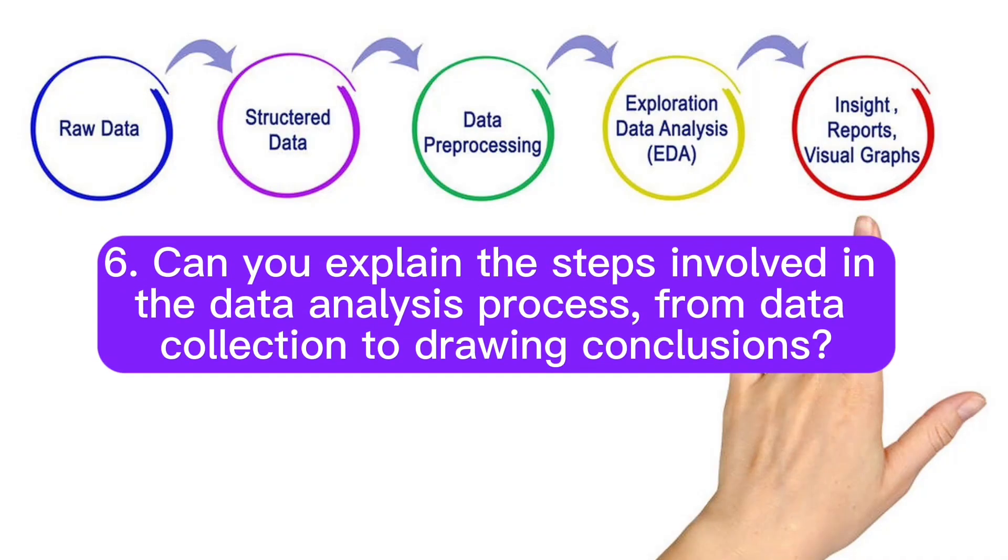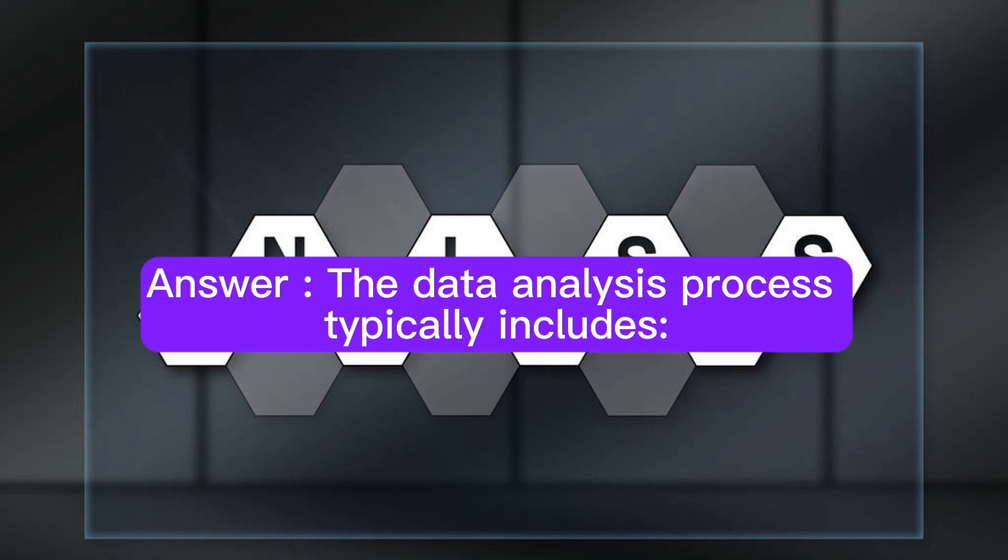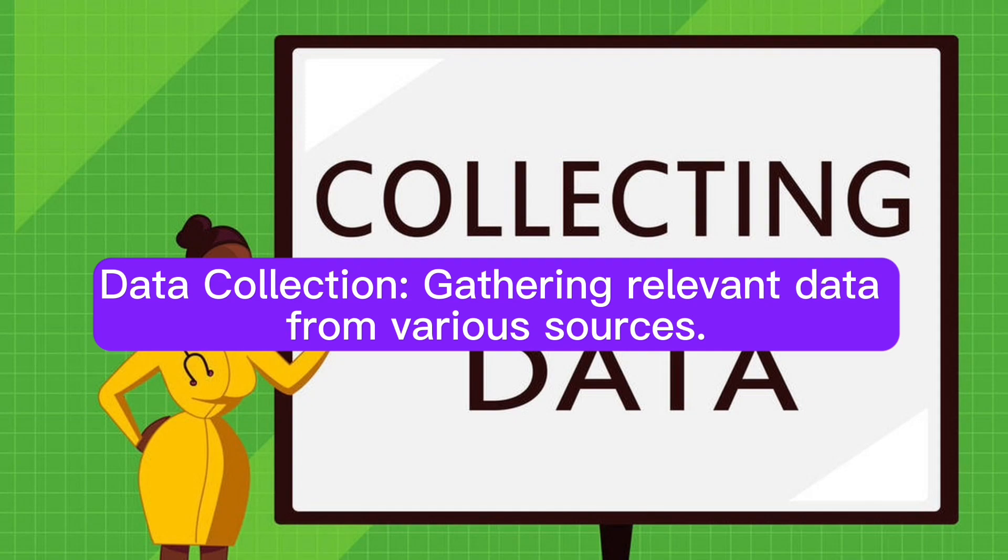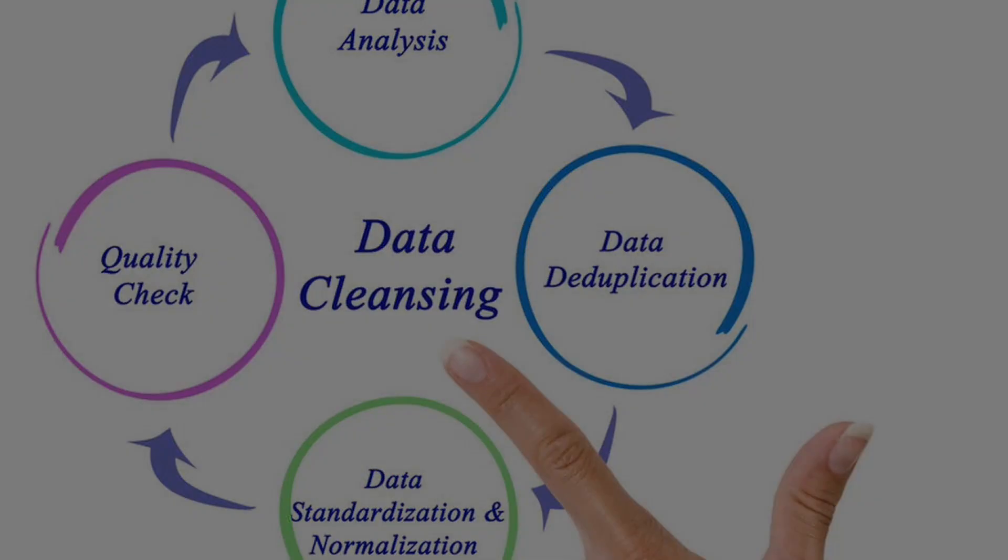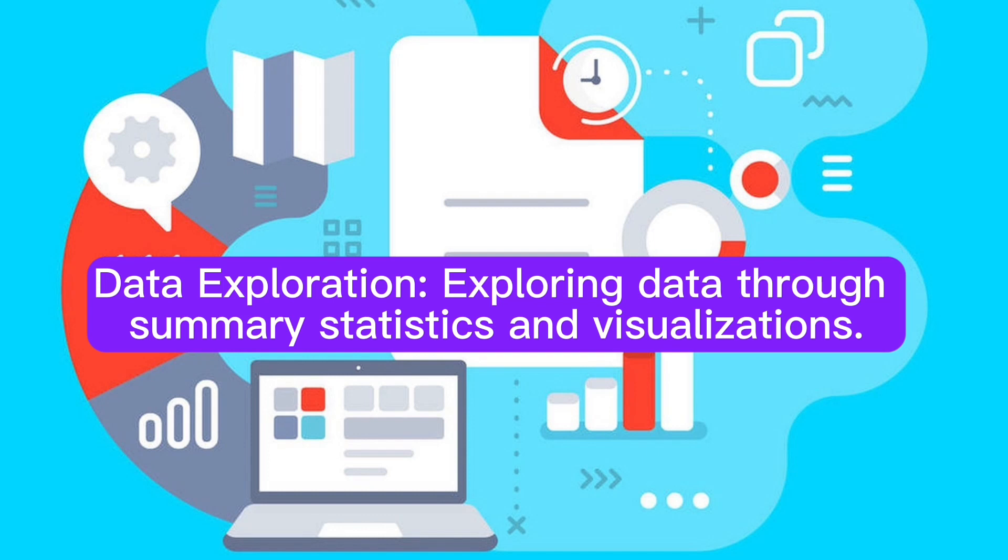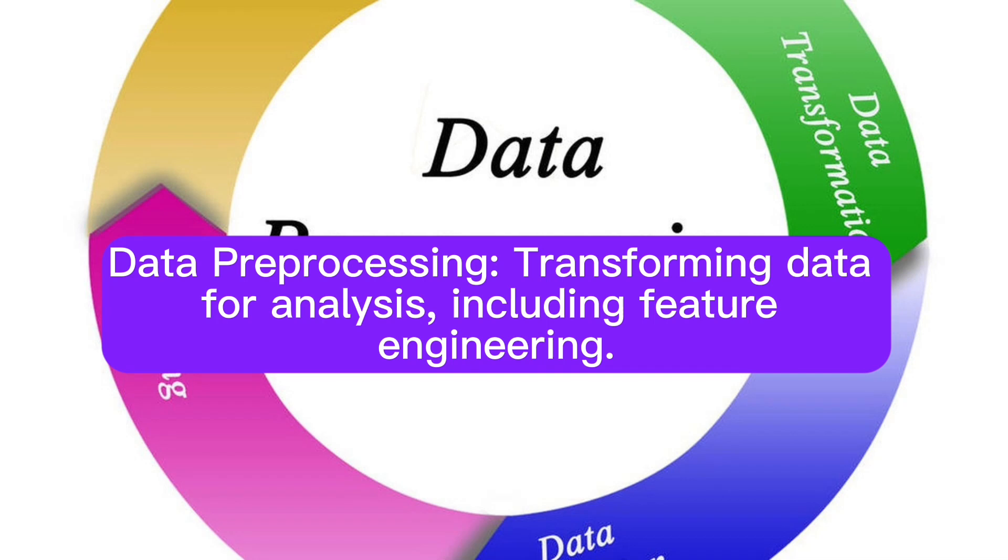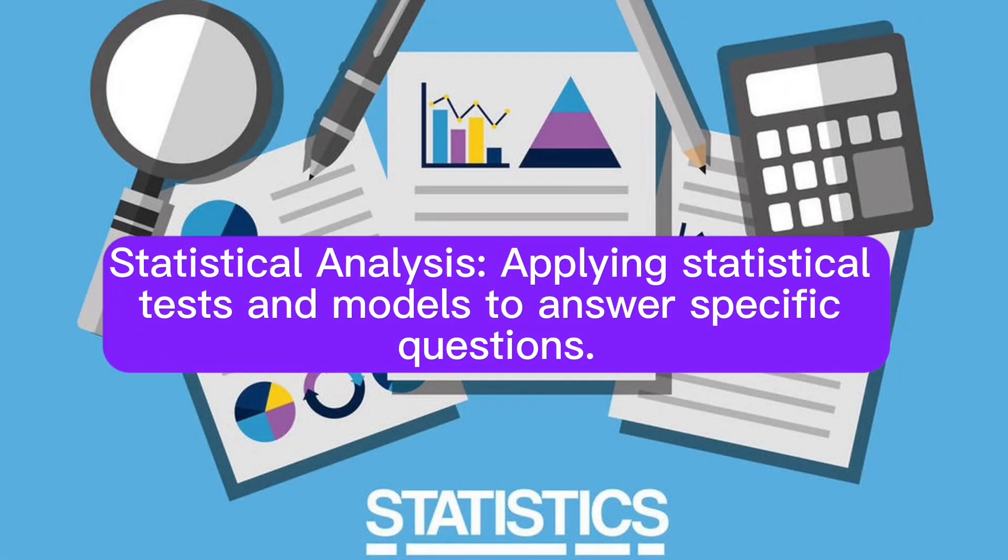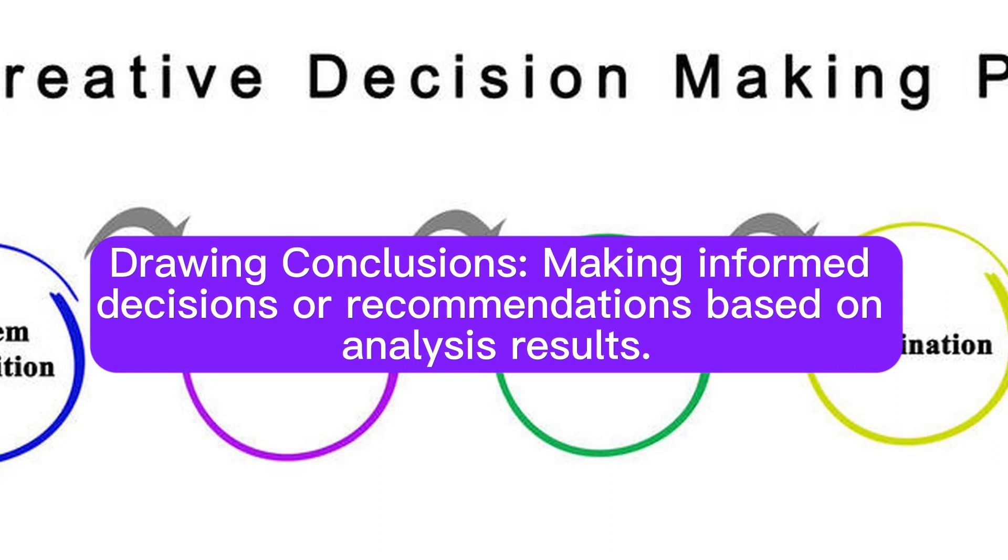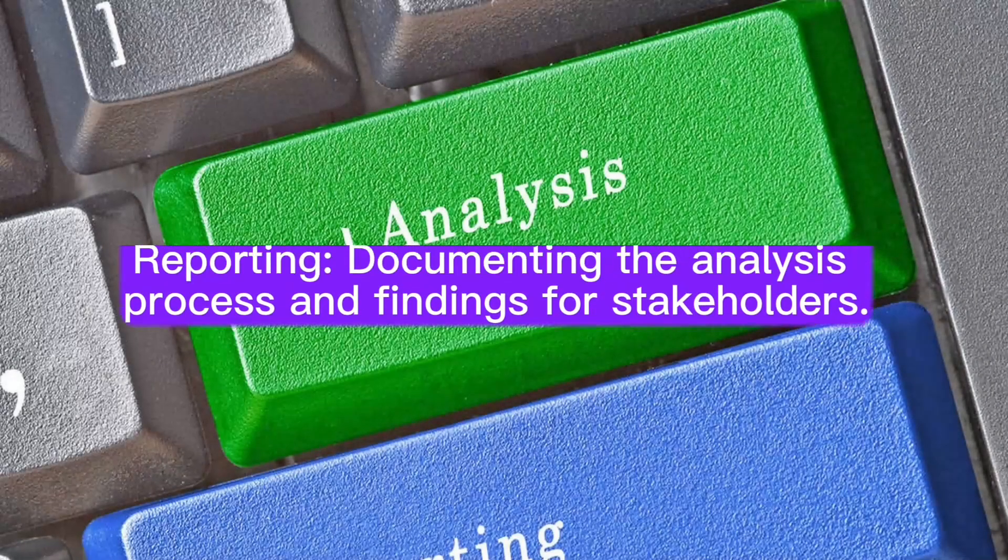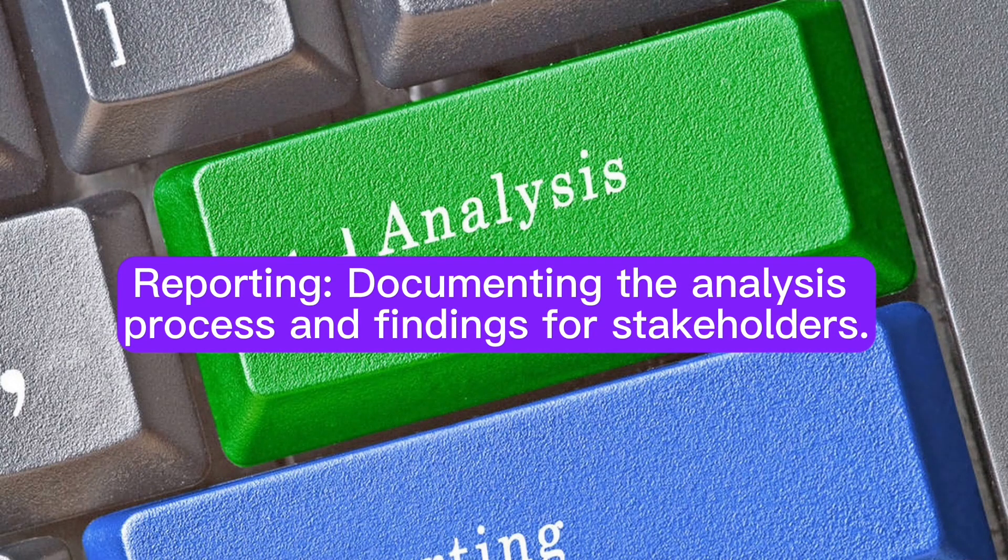Question 6: Can you explain the steps involved in the data analysis process, from data collection to drawing conclusions? Answer: The data analysis process typically includes data collection, gathering relevant data from various sources; data cleaning, identifying and handling missing values, outliers, and inconsistencies; data exploration, exploring data through summary statistics and visualizations; data pre-processing, transforming data for analysis including feature engineering; statistical analysis, applying statistical tests and models to answer specific questions; data visualization, creating visual representations to communicate findings; drawing conclusions, making informed decisions or recommendations based on analysis results; and reporting, documenting the analysis process and findings for stakeholders.